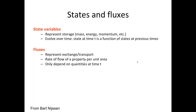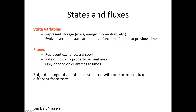Fluxes represent an exchange or transport — a rate of flow of a property per unit area — and they only depend on quantities at time t. For example, the solar flux hitting your snowpack right now doesn't depend on whether the sun was out the minute before. The rate of change of a state variable is associated with one or more fluxes that are different from zero. So if you want to melt snow by having the sun come up, you have a flux of solar energy coming in — zero before sunrise, then whatever it is once the sun rises — acting on your state variable of snow water equivalent.